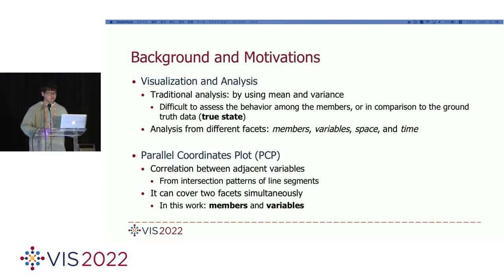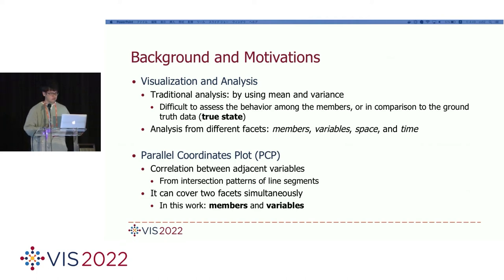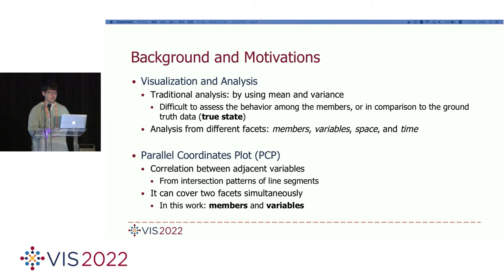Domain experts in meteorology have historically used mean and variance for analyzing ensemble simulation outputs. However, it is difficult to assess the behavior among the members, or in comparison to the ground truth data. It may also require analysis from different facets such as members, variables, space, and time. In this work, we focus on parallel coordinates plots, or PCP, which is a popular visualization technique for analyzing high-dimensional datasets. Correlation between adjacent variables can be inferred from the intersection pattern of line segments, and it can cover two facets of simulation: members and variables.